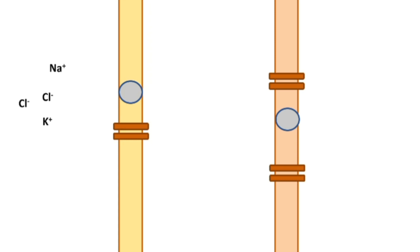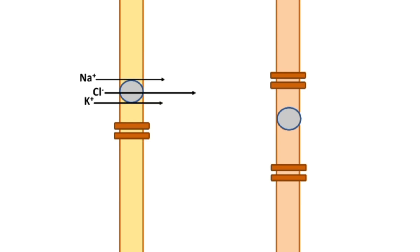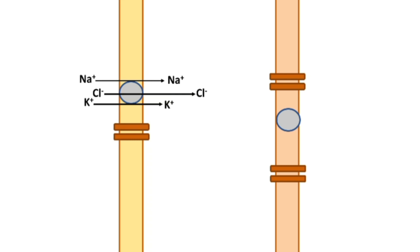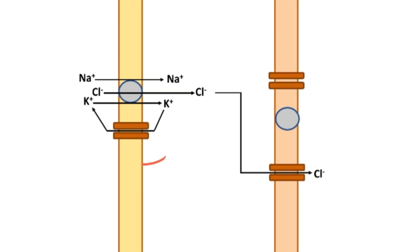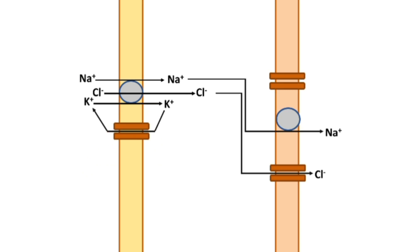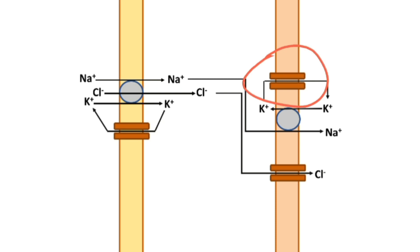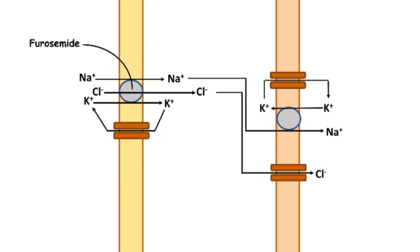Now let us look at the mechanism of loop diuretics. These are sodium, chlorine, and potassium ions on the luminal side of the membrane, and they enter through the luminal membrane via the sodium, potassium, and chlorine co-transporter. Chlorine then enters the basolateral membrane via the chlorine channel, and potassium re-enters the luminal membrane using the potassium channel. Sodium enters the basolateral membrane via the sodium-potassium ATPase pump, which causes the exit of potassium ions from the basolateral membrane, and they re-enter via the potassium channel. Furosemide, a high ceiling loop diuretic, acts on the sodium, potassium, and chlorine co-transporter, inhibiting the entry of these ions and causing their excretion via urine.